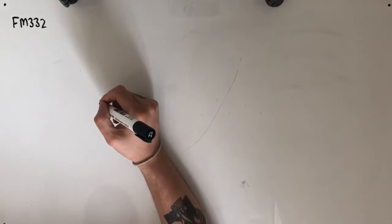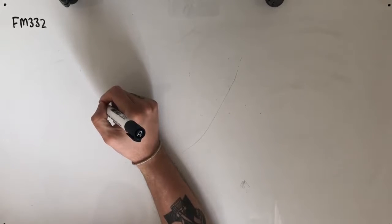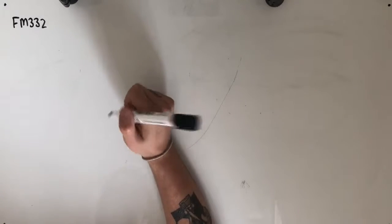Hey guys, welcome to question FM332 of the Further Maths Fortify Study Guide. This question reads, a triangle ABC has, and then we've got three dot points.